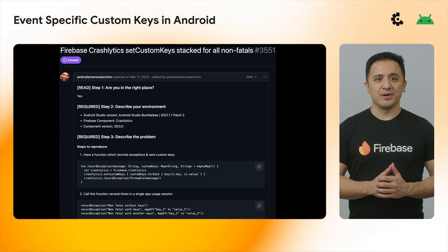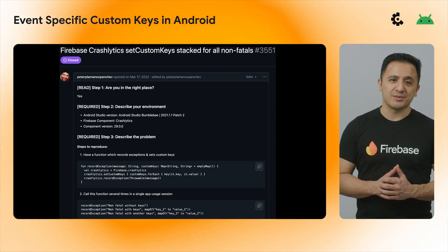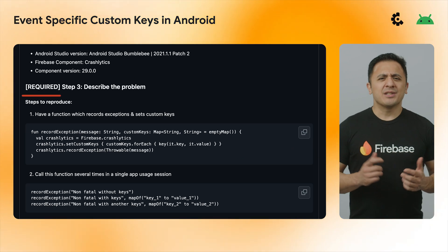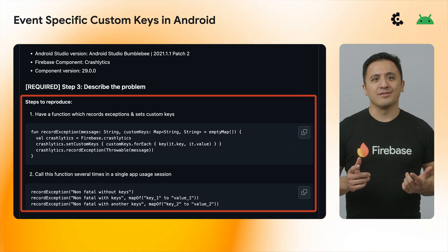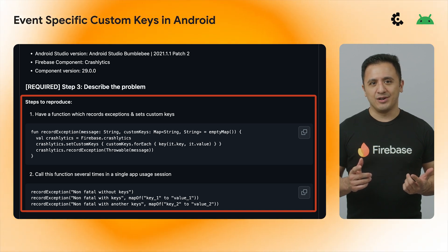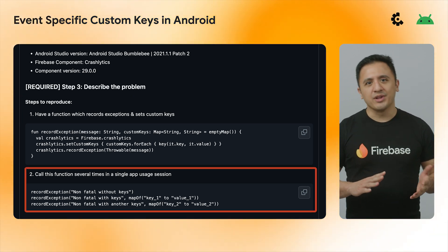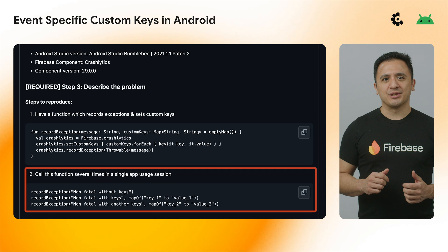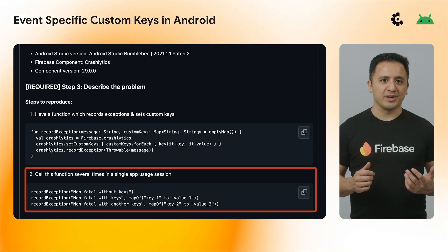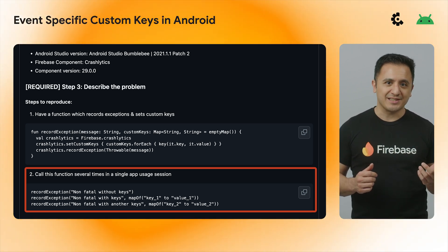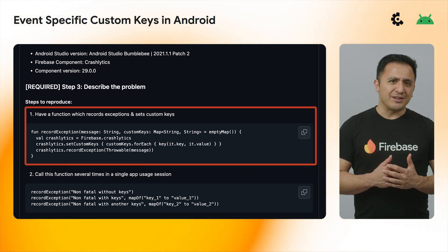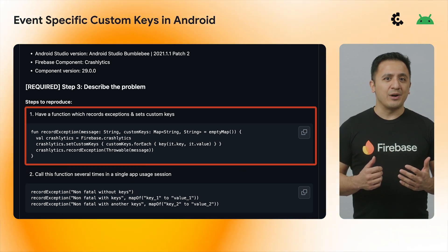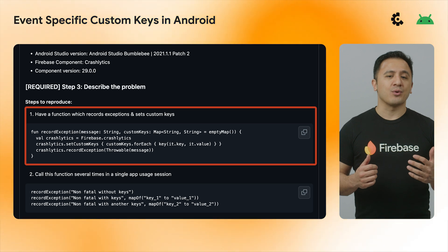Speaking of adding custom info to better understand your app, Crashlytics has added a new sort of custom keys to Android. Historically, calls to recordException would all show the final state of custom keys at the time of the final call. So if you recorded three non-fatal exceptions in a row using Crashlytics.recordException with calls to Crashlytics.setCustomKeys in between each, they would all display the final value of the keys no matter what the value of said keys was at the time of recording the exception.